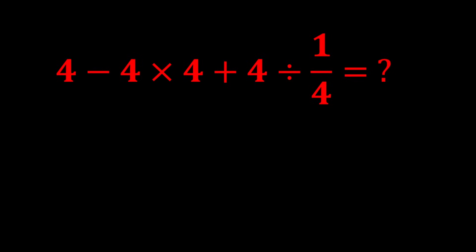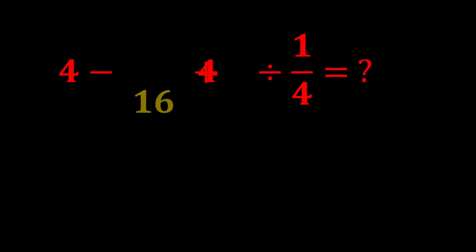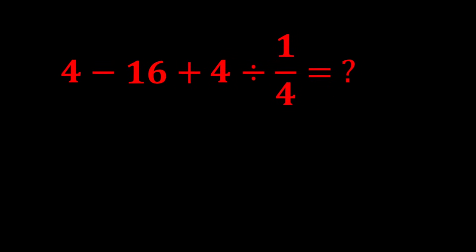Also, multiplication and division have equal priority, so we move from left to right and perform whichever comes first. Moving from left to right, we first reach 4 multiplied by 4, which equals 16, and the expression becomes 4 minus 16 plus 4 divided by 1 over 4.